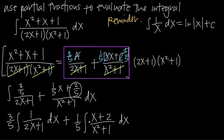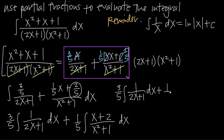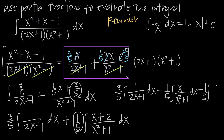Before evaluating, we also want to split the second integral into two integrals of its own. Whenever you have multiple terms in the numerator you can split them into separate fractions. So instead of x plus 2 divided by x squared plus 1, we say x divided by x squared plus 1 plus 2 divided by x squared plus 1. Rewriting, we get 3 fifths times the integral of 1 over 2x plus 1 dx, plus 1 fifth times the integral of x over x squared plus 1 dx, plus 1 fifth times the integral of 2 over x squared plus 1 dx.